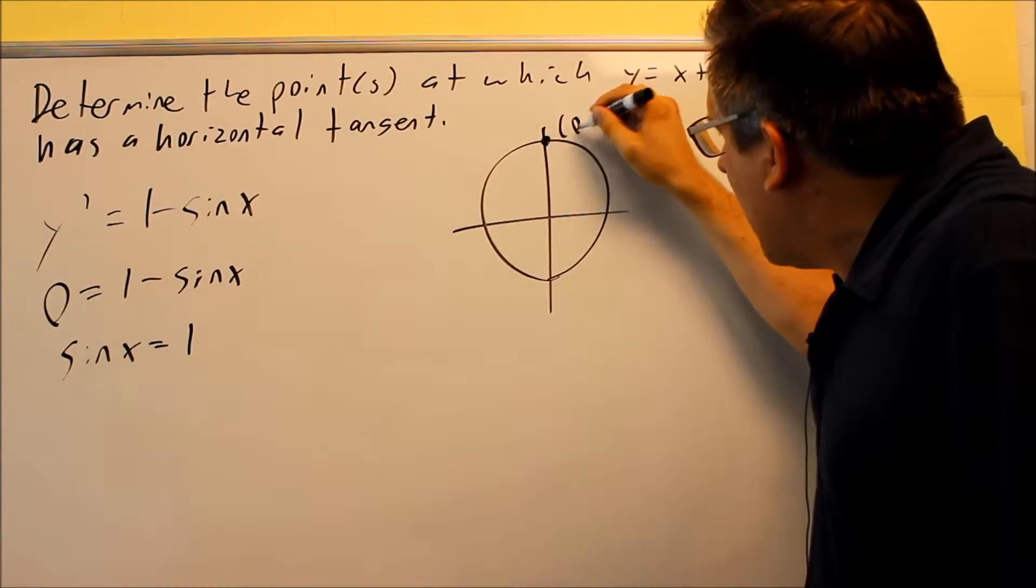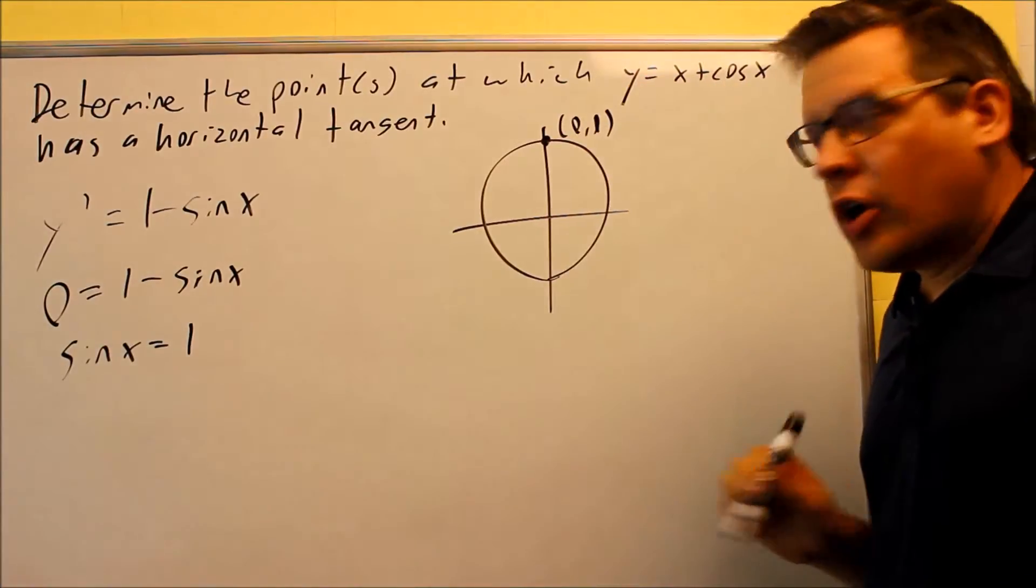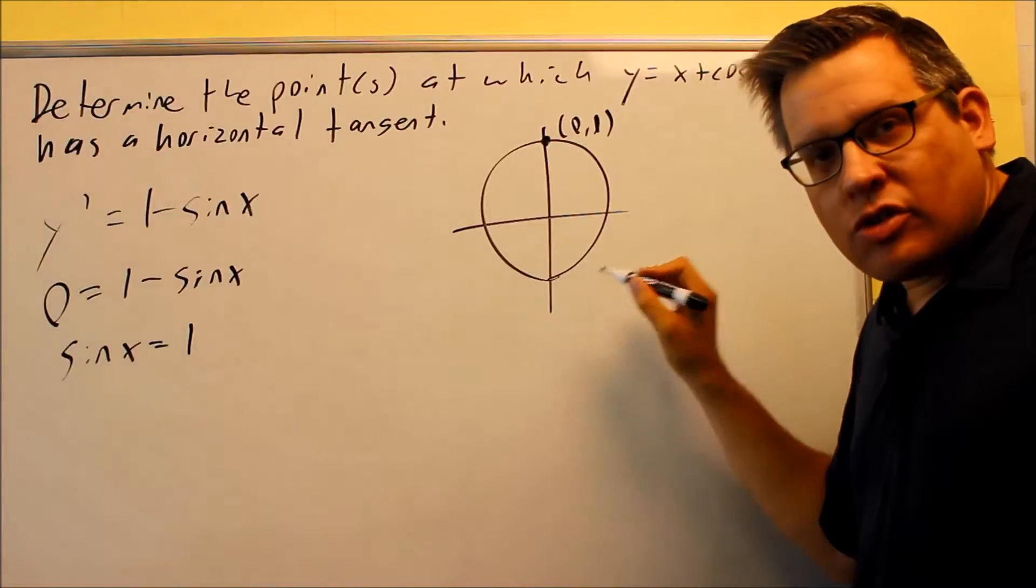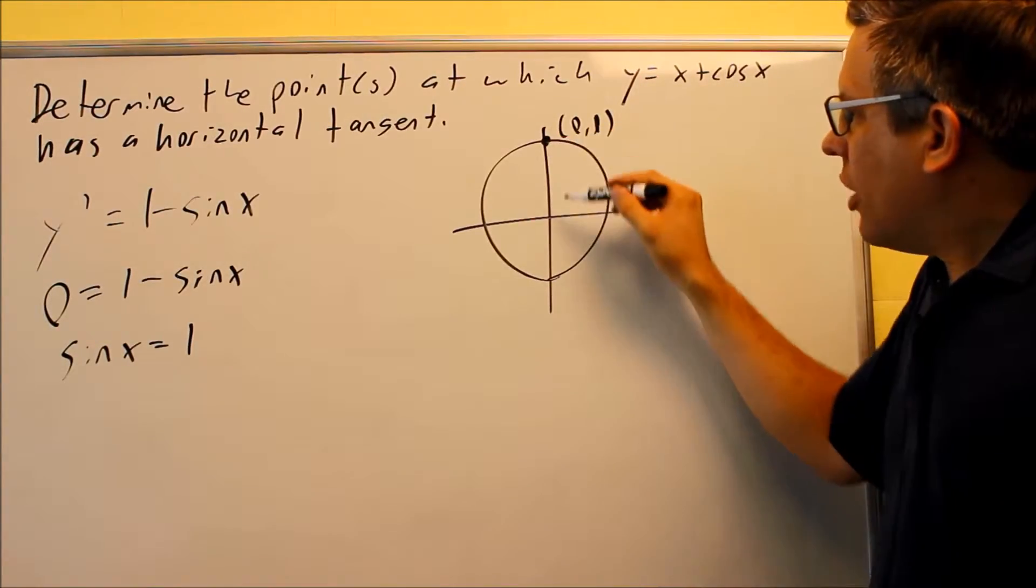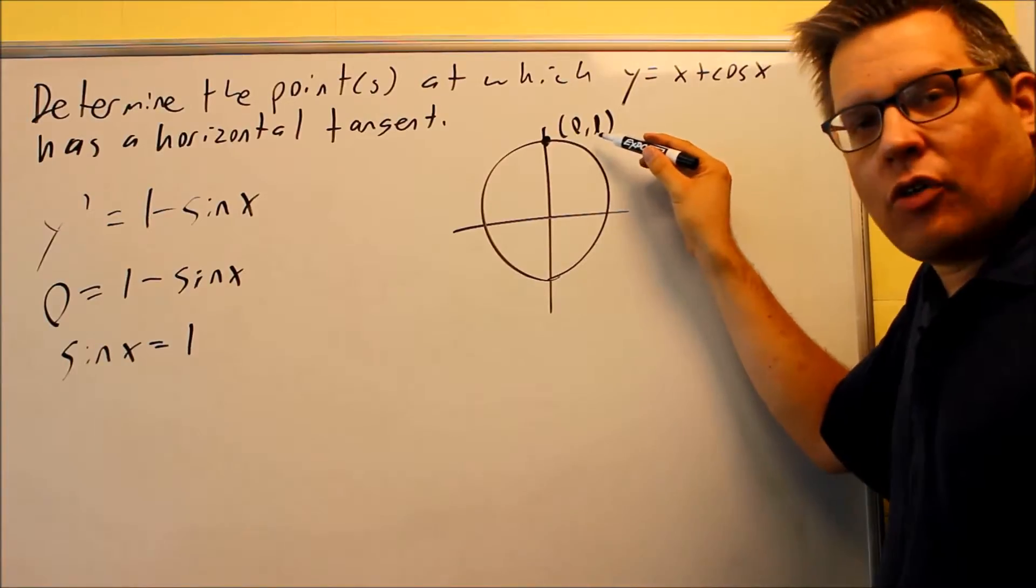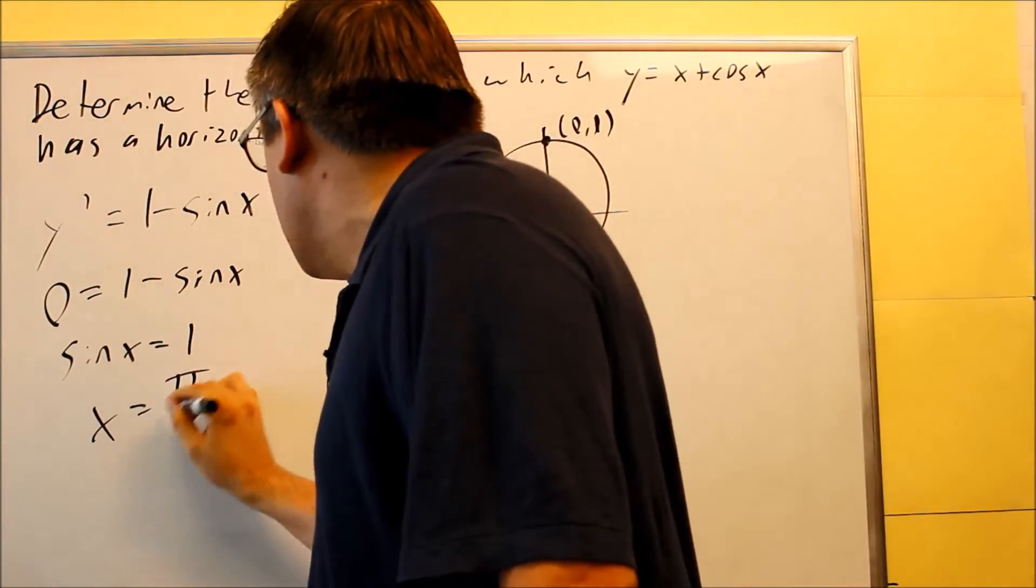That only occurs at one spot: (0, 1). Down here at (0, -1), you don't want to use that. We need the angle at which the y-value is one, and there's only one angle that works: π/2.